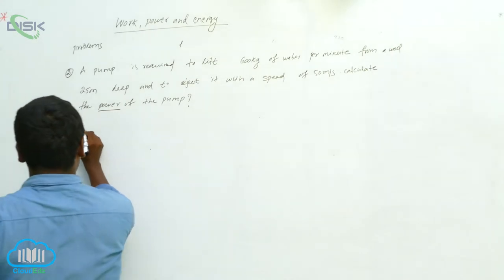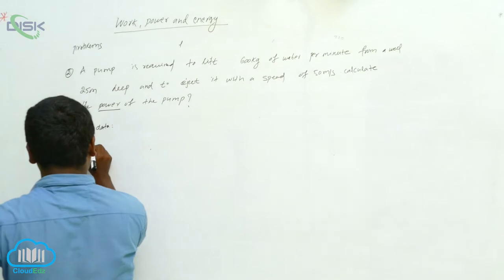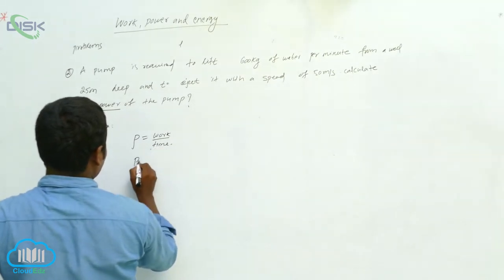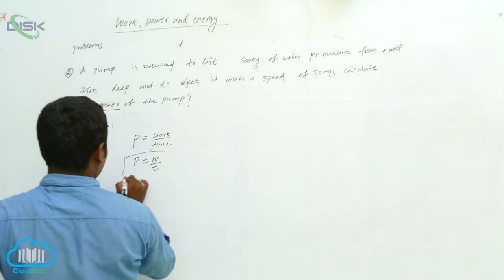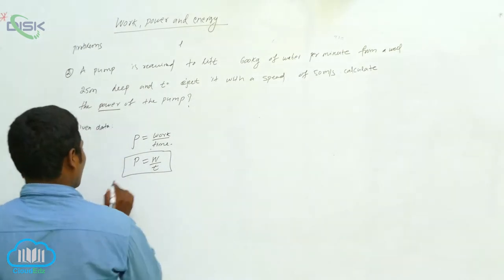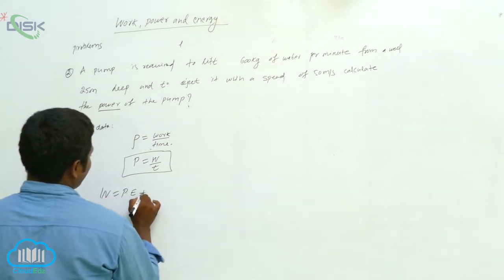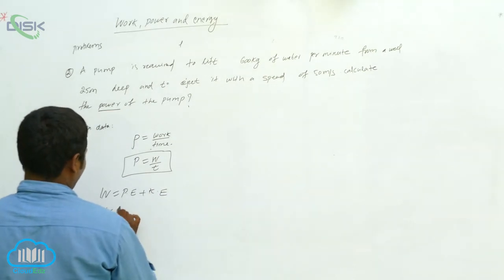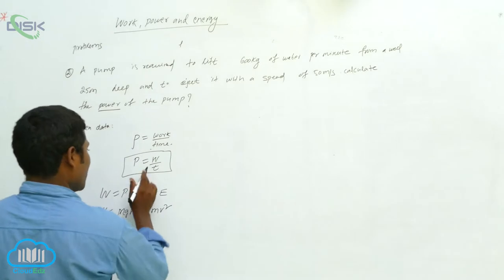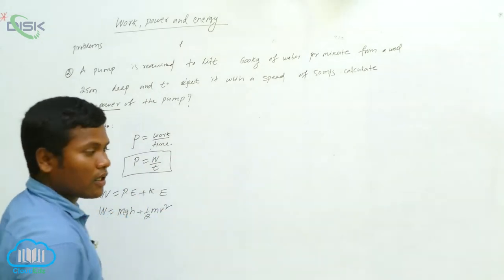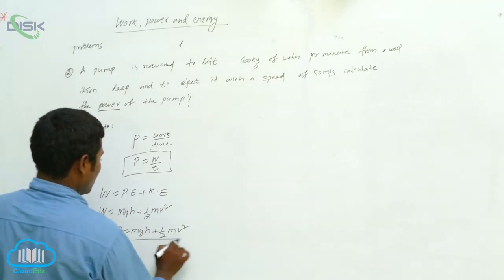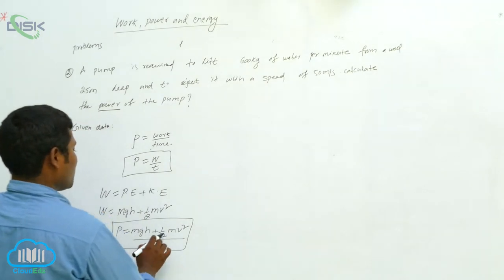What is being asked? Power. What is the formula? Power equals work divided by time. Here, two types of work are involved: one is potential energy and the other is kinetic energy. So work equals PE plus KE, that is mgh plus half mv squared. Find W and substitute to get the power P, which gives us mgh plus half mv squared divided by t.